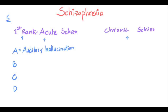Usually that hallucination is second person or third person. Third person hallucination is when two people are talking about you. Second person hallucination is when someone is talking directly to you. The third person hallucination in schizophrenia is also known as echo de la pensée.